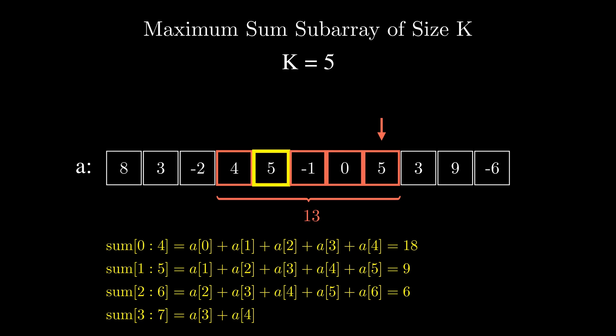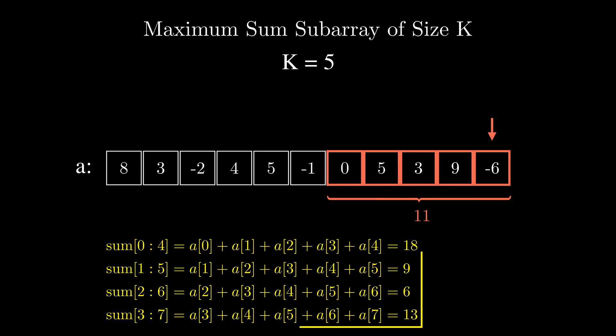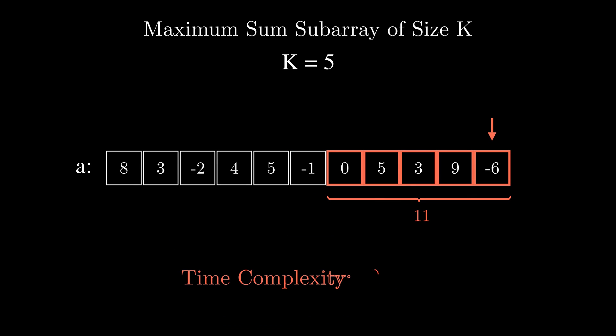So for each ending index we would calculate the sum of k numbers and finally get the largest one out of those. As we calculate the sum of k numbers for each of the endpoints the algorithmic complexity would be O of n times k.